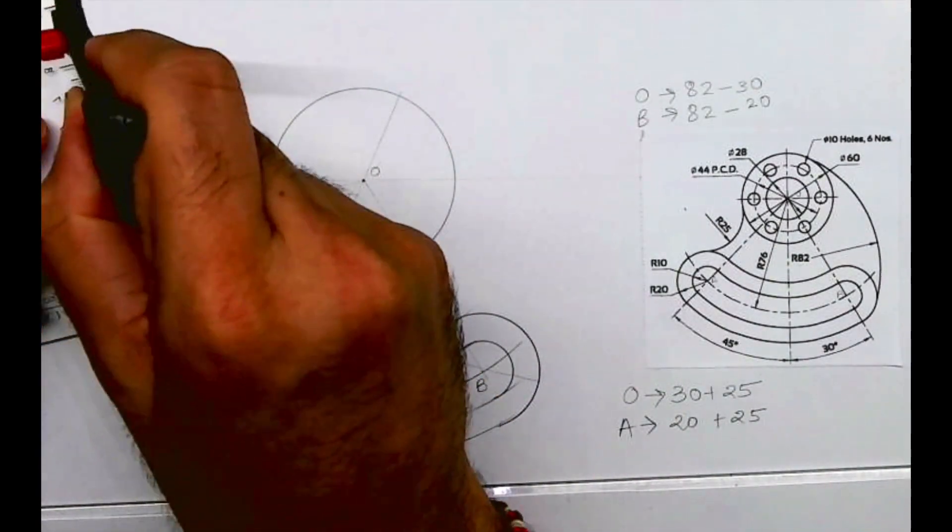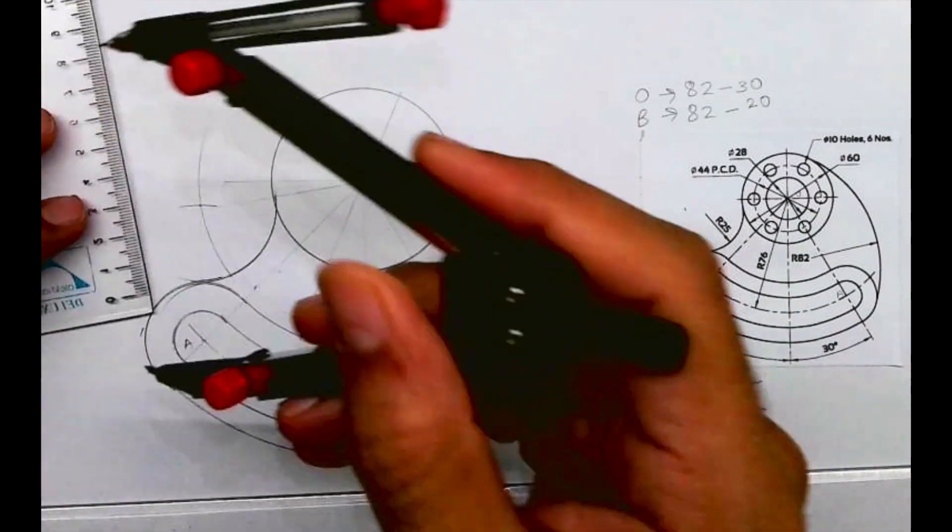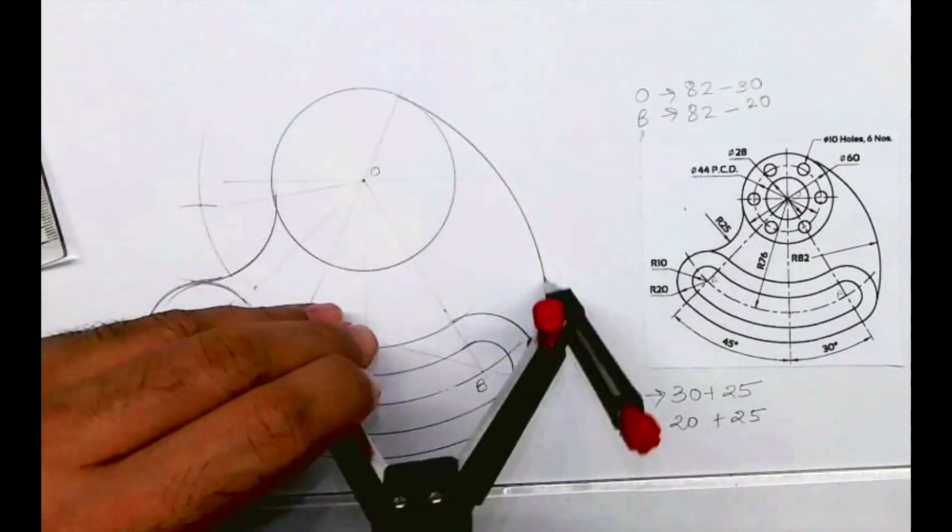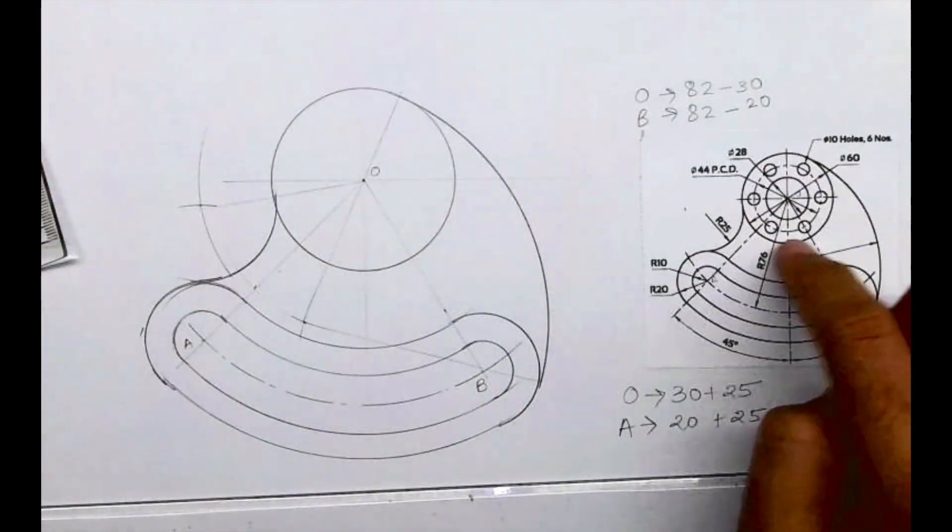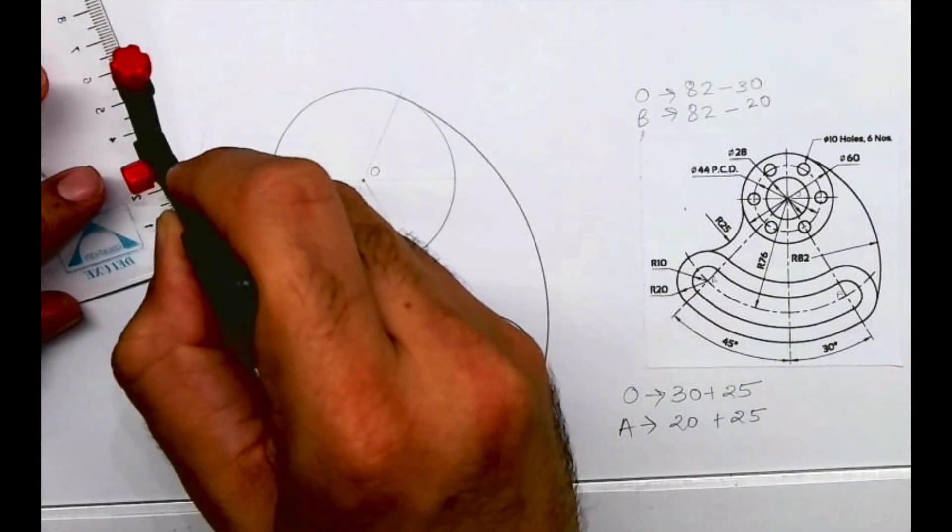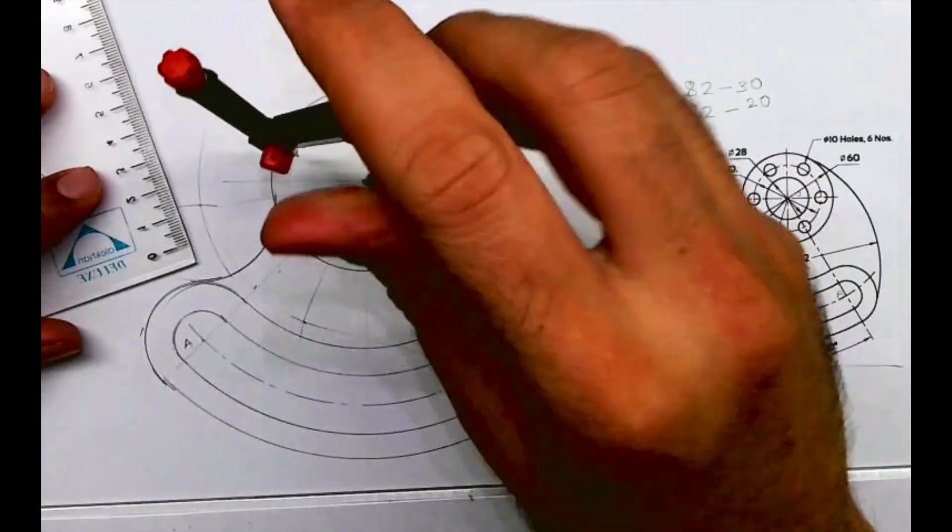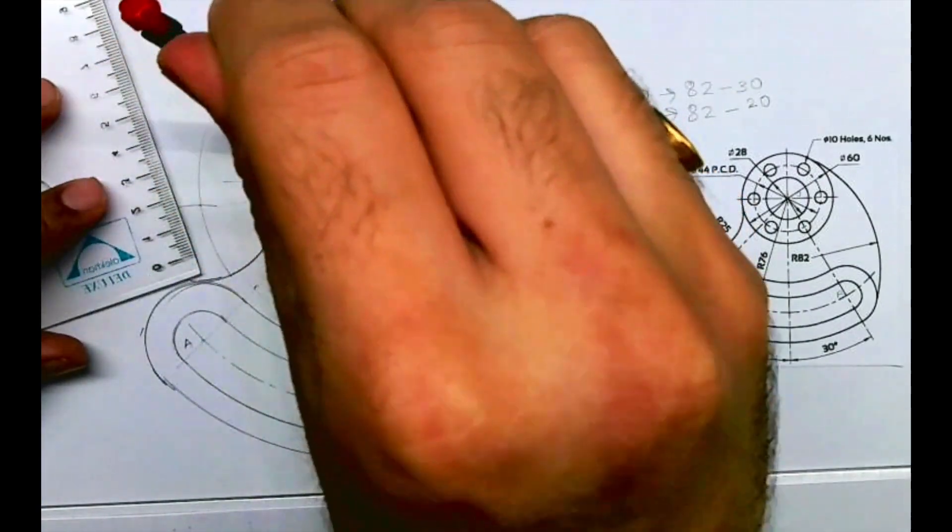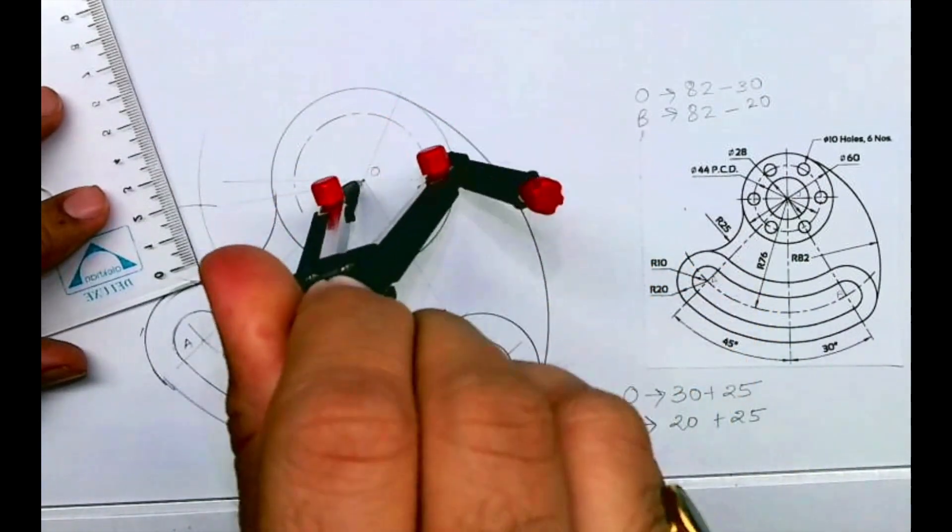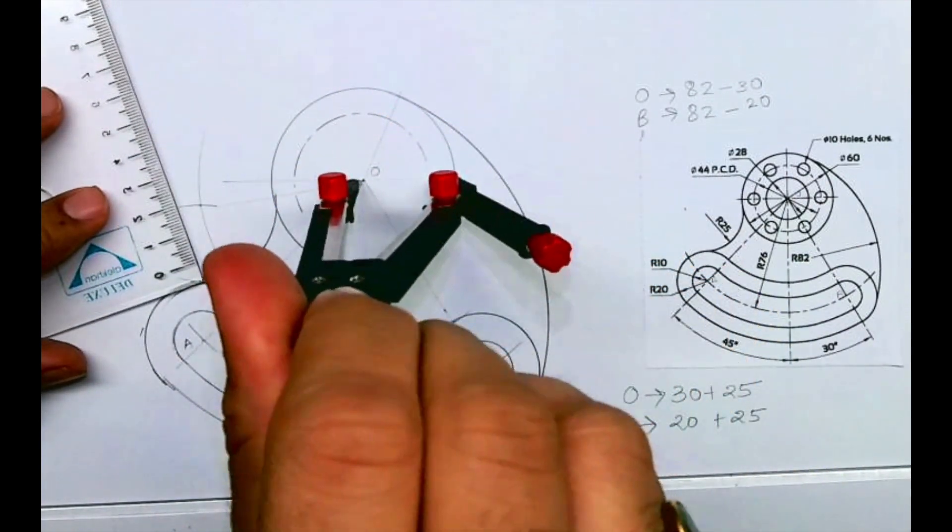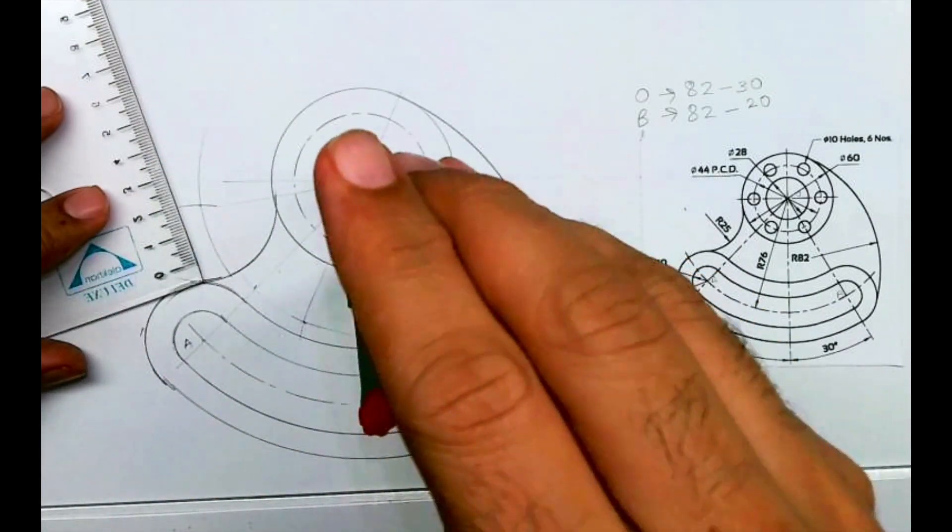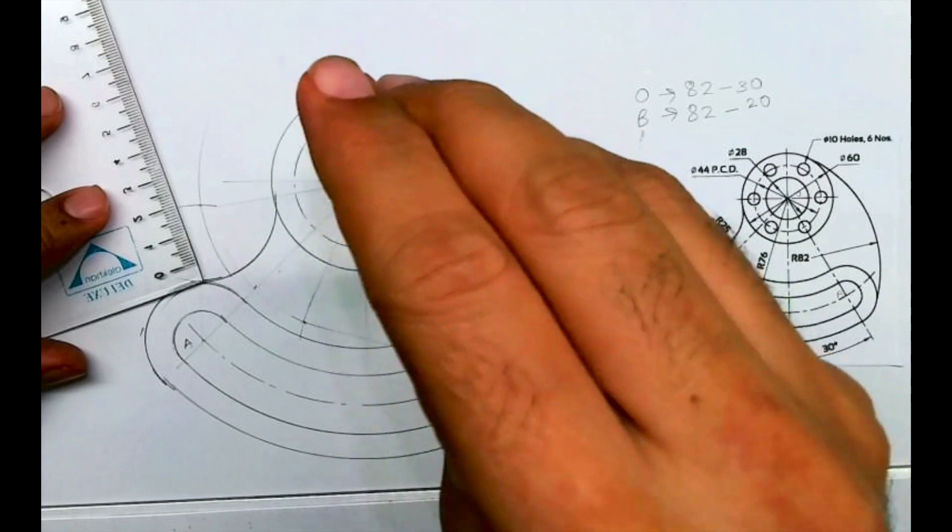Wherever they intersect, from that point we can cut that diameter 44 PCD. What do you mean by PCD? Pitch circle diameter. So all the six circles, they have the same diameter. So that's why it's written pitch circle diameter.